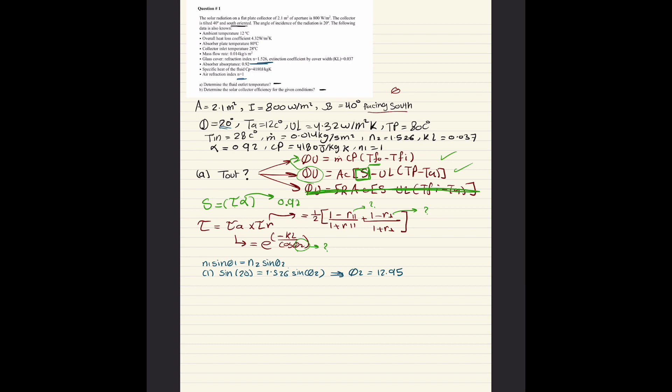We have everything to find tau A. So plugging everything in: e to the power of negative KL, given as 0.037, over cosine 12.95. Plugging that in the calculator we end up with tau A equals 0.9627.